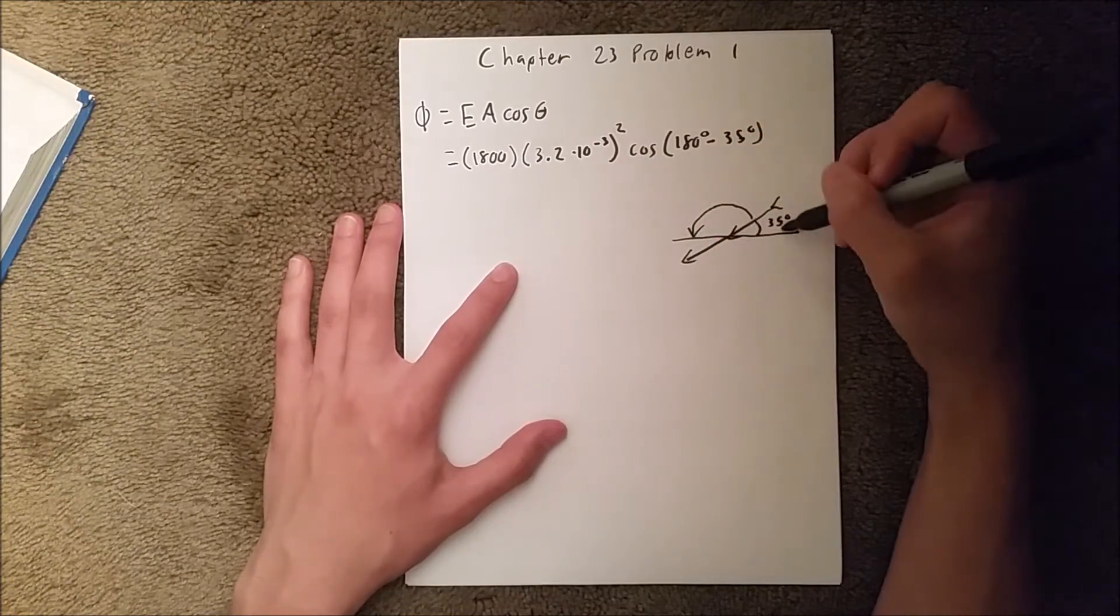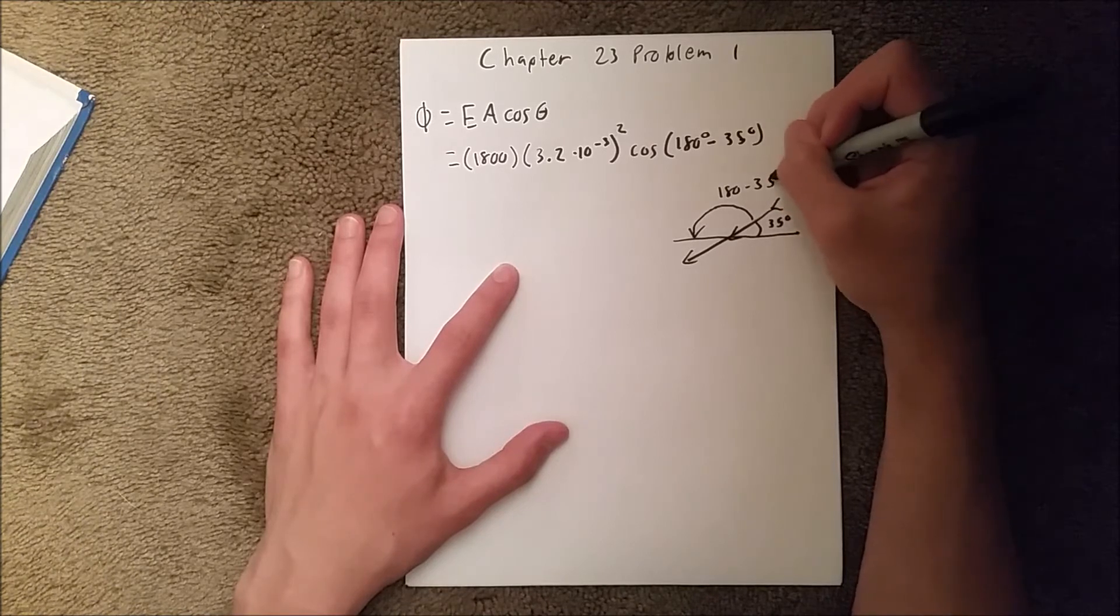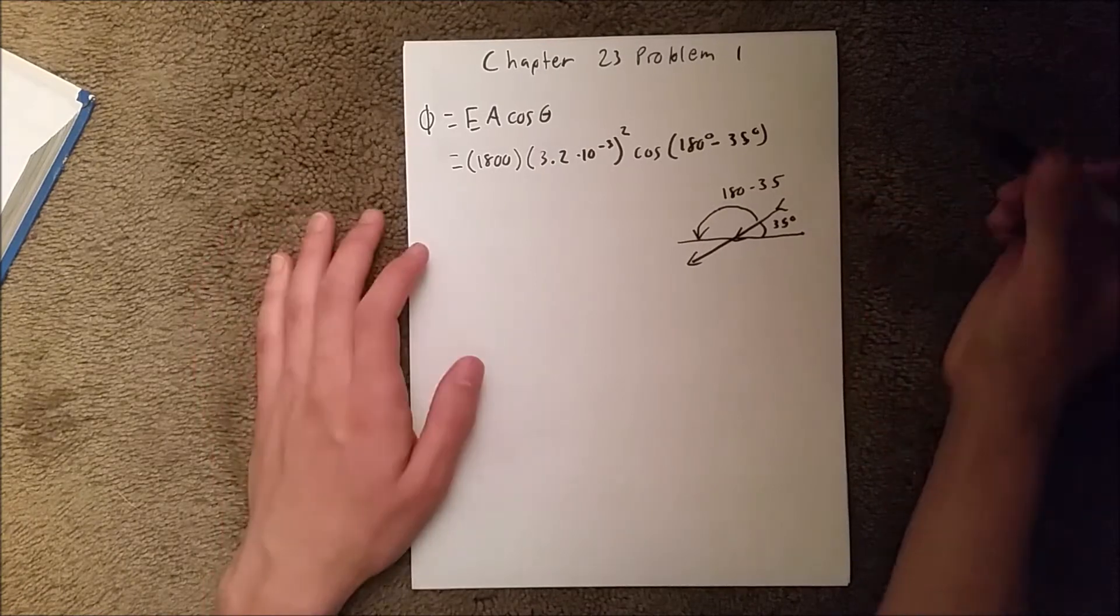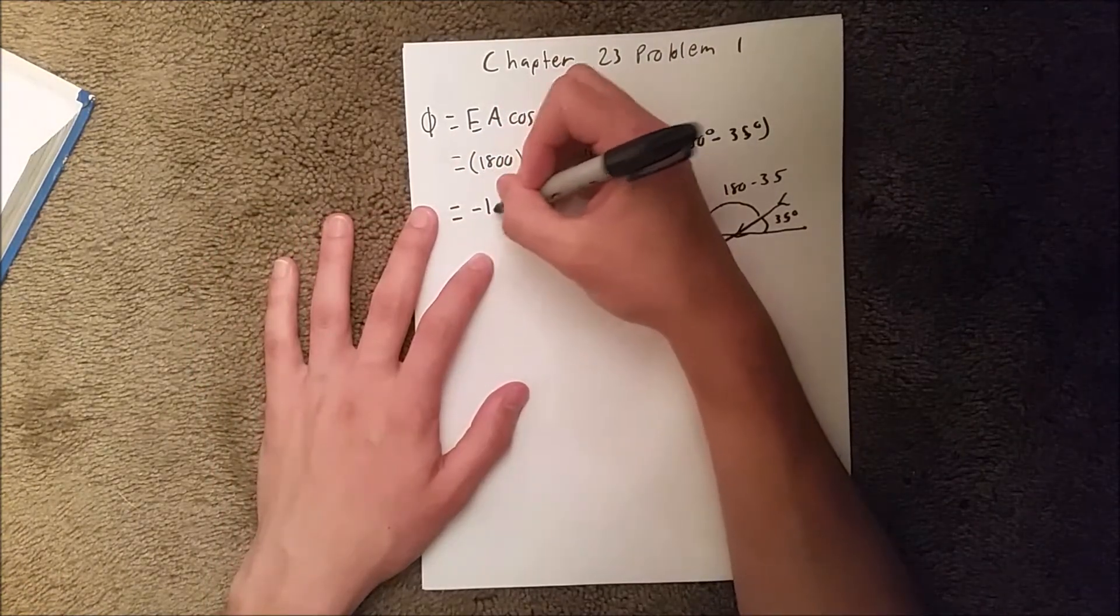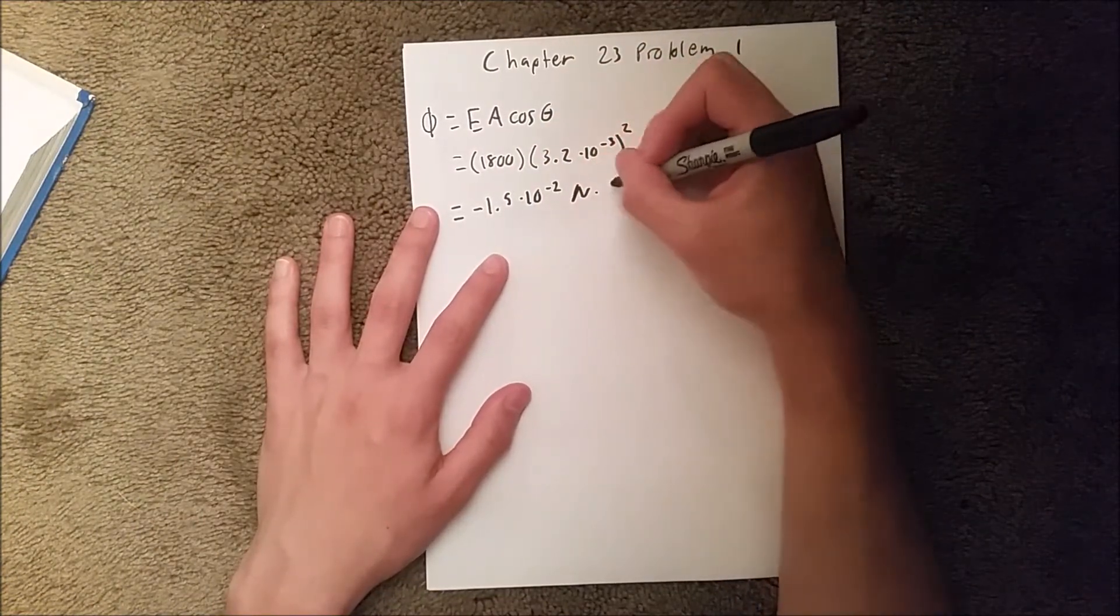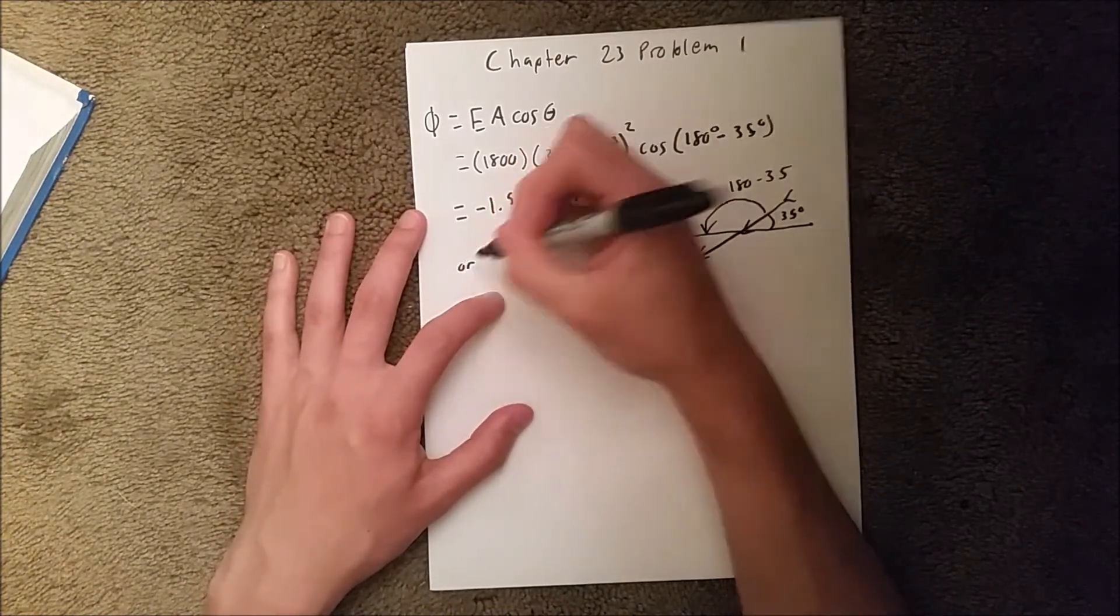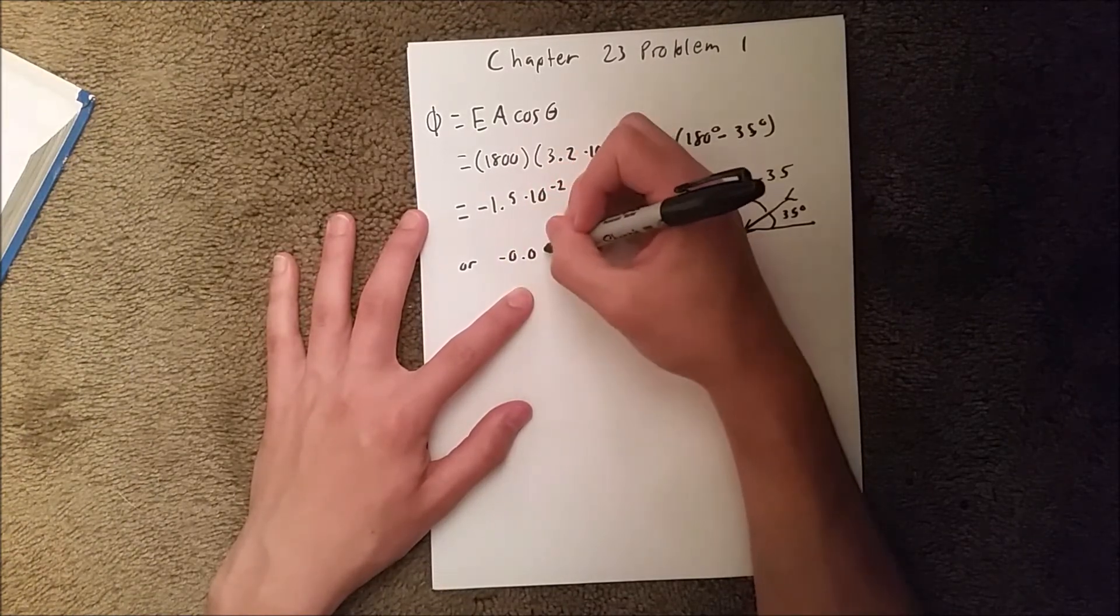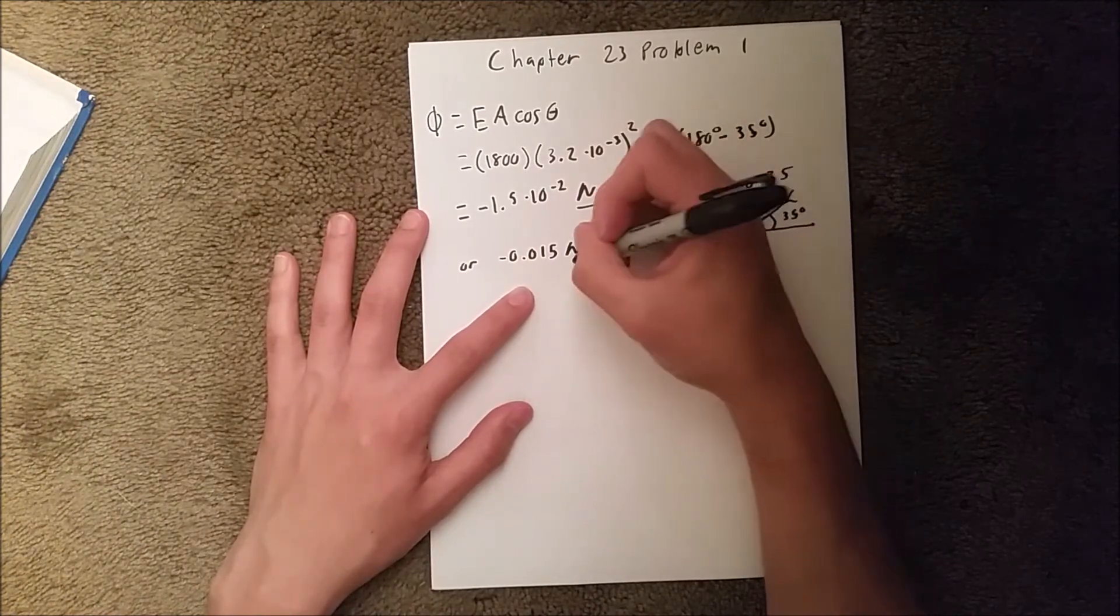So when you put all that in your calculator, you should get -1.5 × 10^-2 newtons times meters squared per coulomb, or just -0.015 newtons times meters squared per coulomb.